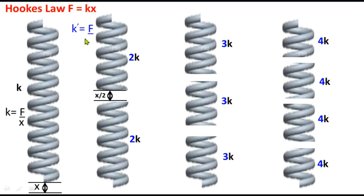So the proportionality constant, the spring constant here is k' is equal to F divided by not x but x divided by 2. Now x divided by 2 is denominator. And we know that the denominator of the denominator becomes numerator.